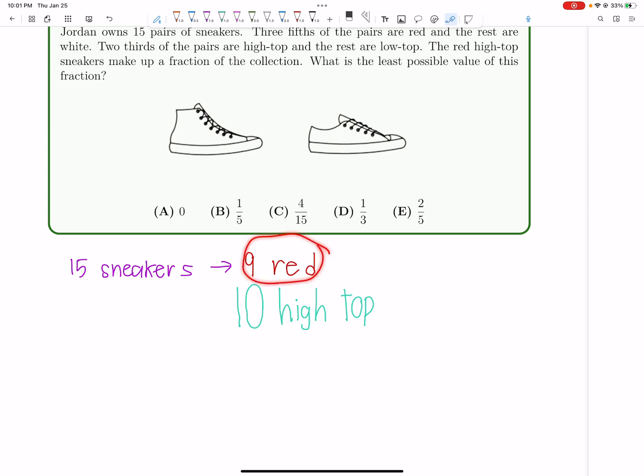Then we've got nine red shoes, and we've got 10 high-top shoes that are completely different from those red shoes. But that's a total of at least 19 shoes. So that won't really work, right? Because we have only 15 pairs of sneakers.